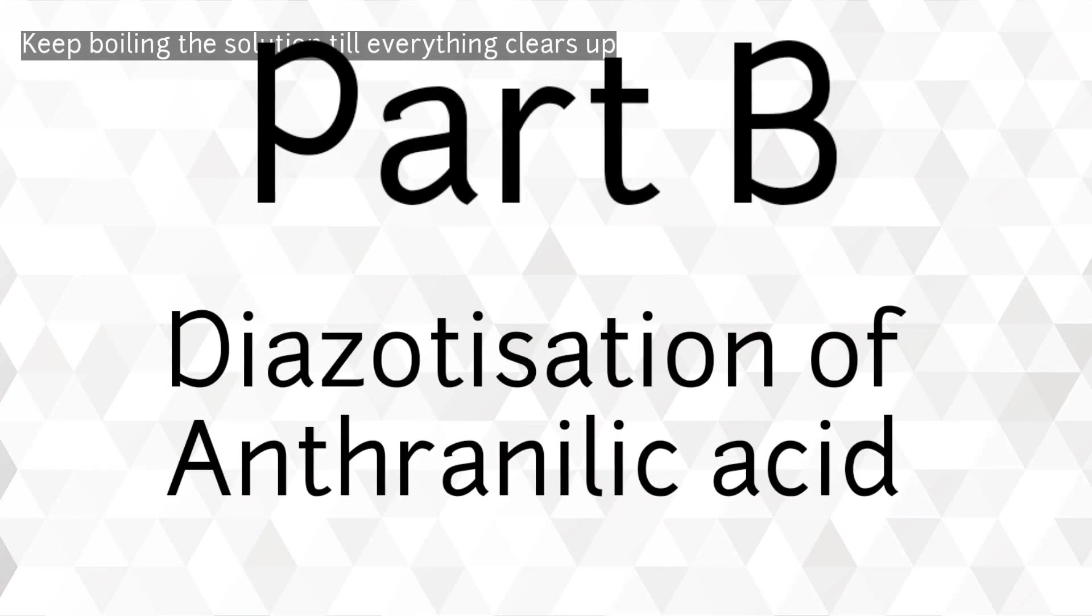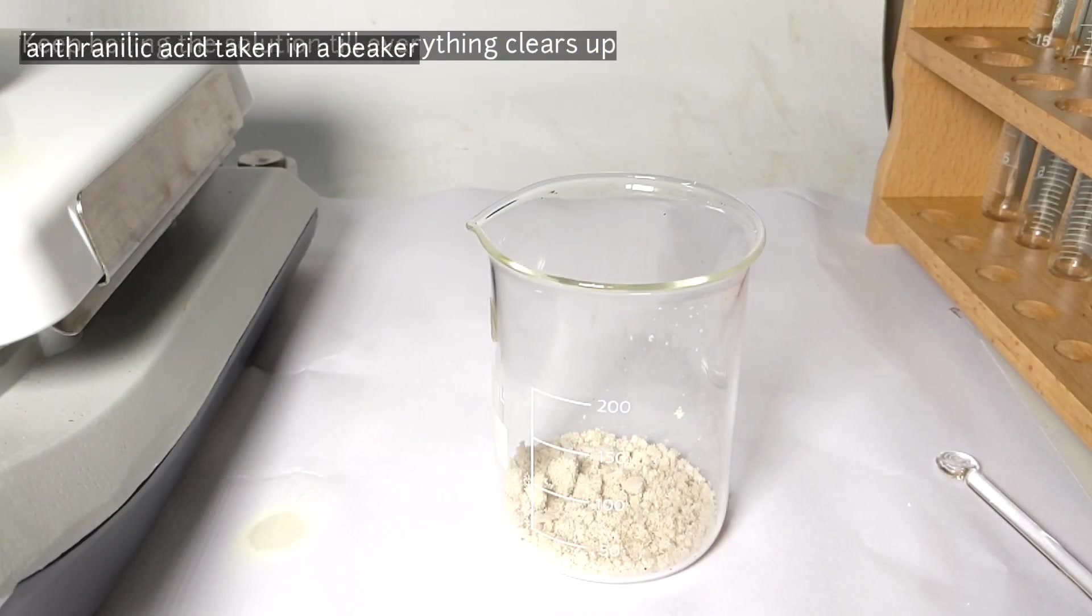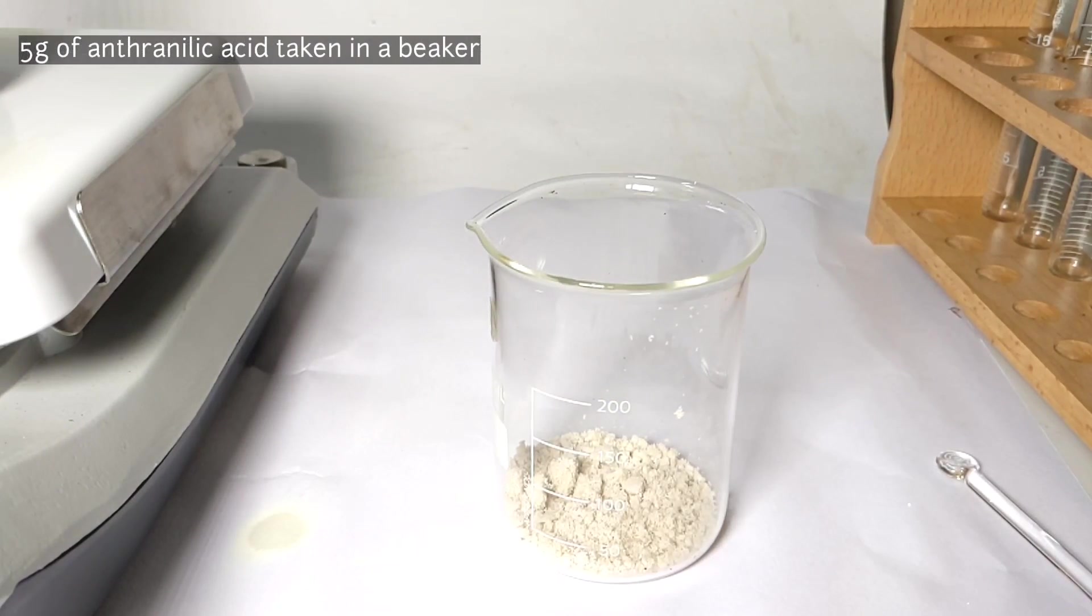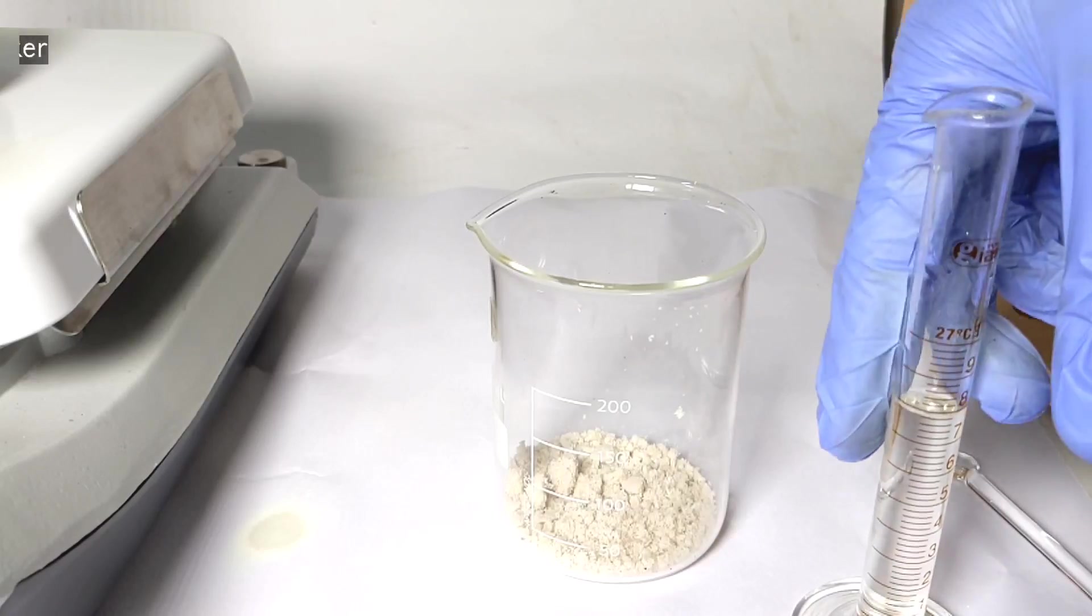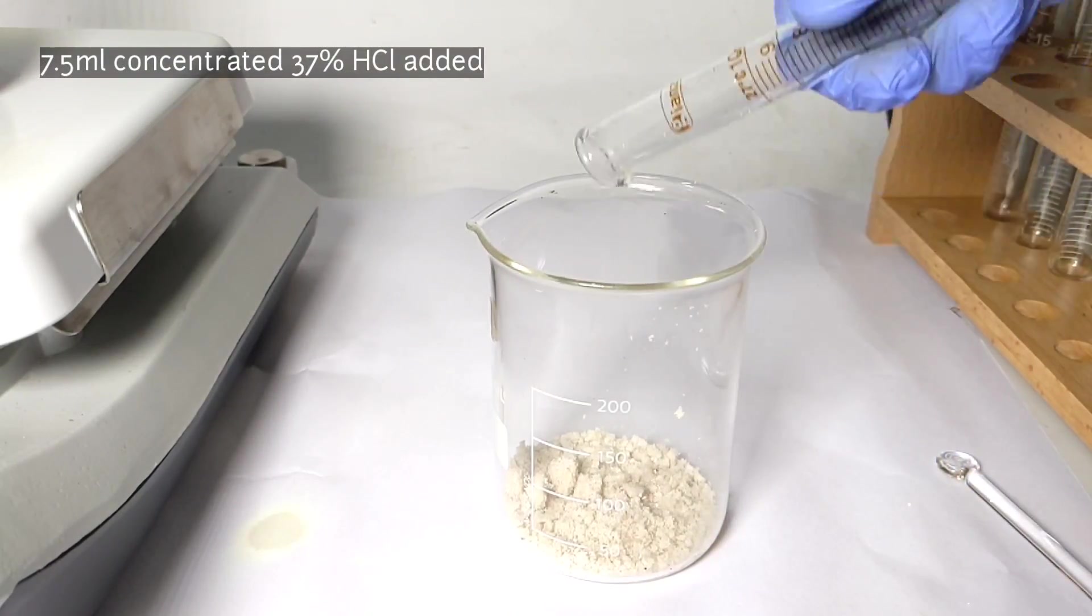In the next part, in Part B, we will be diazotizing anthranilic acid. For that, we take 5 grams of anthranilic acid in a 250 milliliter beaker and then add 7.5 milliliters of 37% hydrochloric acid to it.